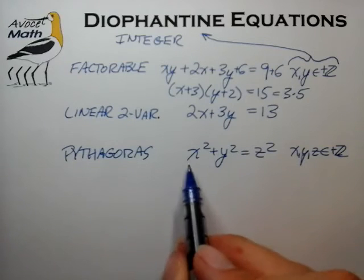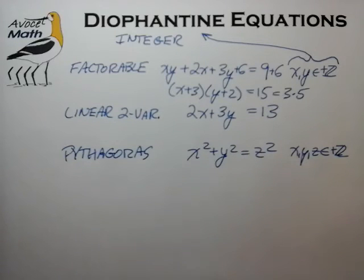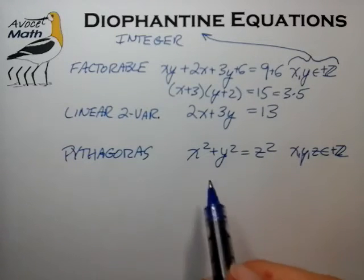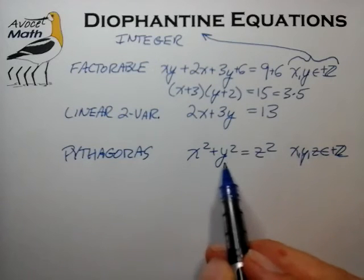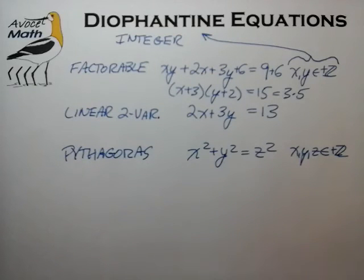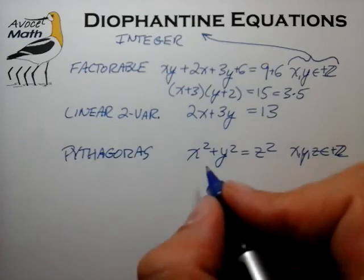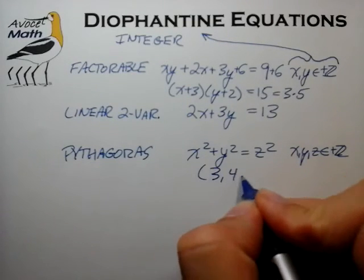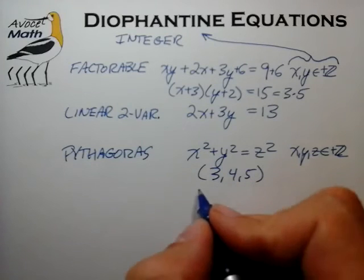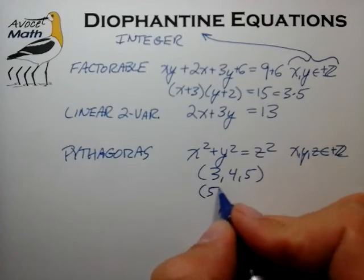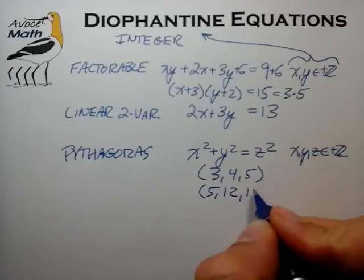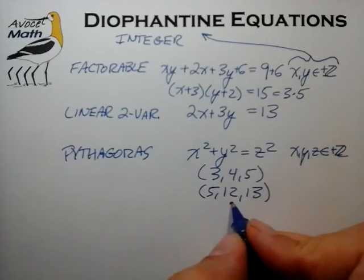You've come across this equation before—it's the Pythagorean equation which relates the two sides of a right triangle to its hypotenuse. As we know, there are some integer solutions which are quite convenient. The most common is the 3, 4, 5 right triangle, and the next most common is the 5, 12, 13 right triangle, and there are many more.